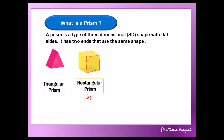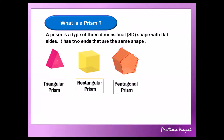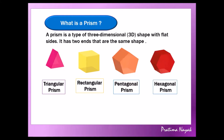The triangular prism has a triangular base. Next, coming to the pentagonal prism — you can see that the base is a pentagon and the back side is also a pentagon, so it is a pentagonal prism. Then similarly, the hexagonal prism has a base with six sides, so it is a hexagonal prism.